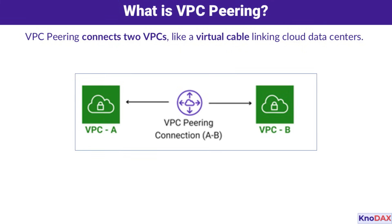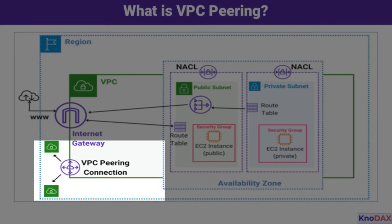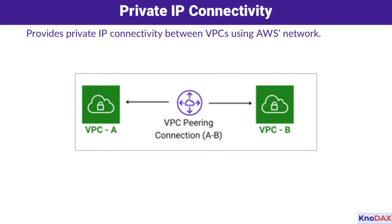Imagine you have two virtual data centers in the cloud, known as VPCs. VPC peering is like creating a private virtual cable between them, allowing them to communicate directly and securely. Think of it as a leased line or fiber connection, but virtual and within AWS. VPC peering enables private communication between your VPCs using AWS's own network. It ensures a secure and direct connection without the need for public IPs or gateways.